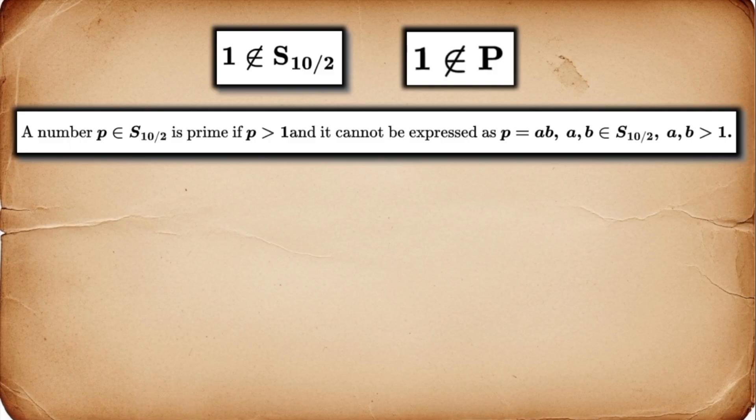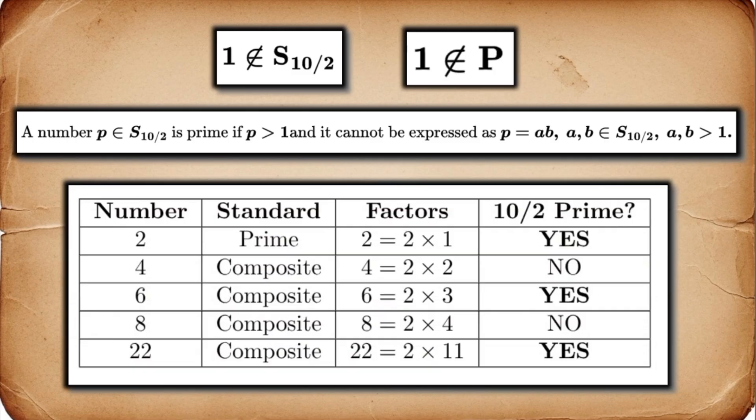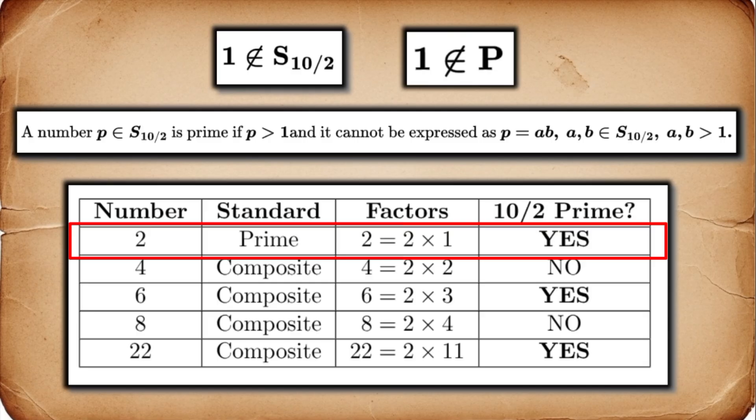So, let's test this with the first few numbers in S10 over 2. First, 2. In normal math, 2 is prime. Can we factor it in our system? We'd need two numbers from S10 over 2 that multiply to 2. The only option is 2 equals 2 times 1. But 1 is not in our system. Therefore, in the 10 over 2 system, 2 is prime.